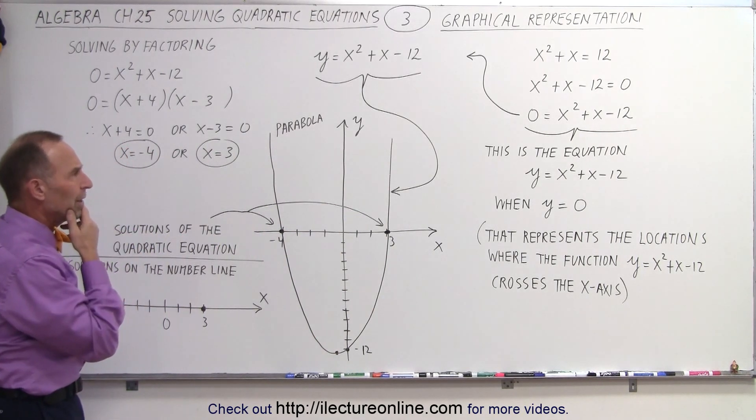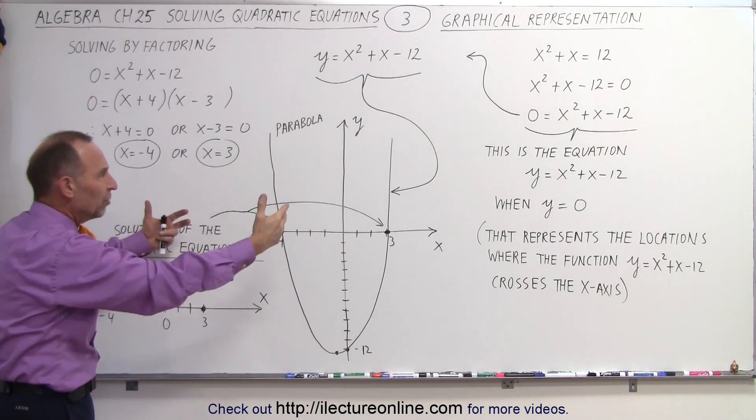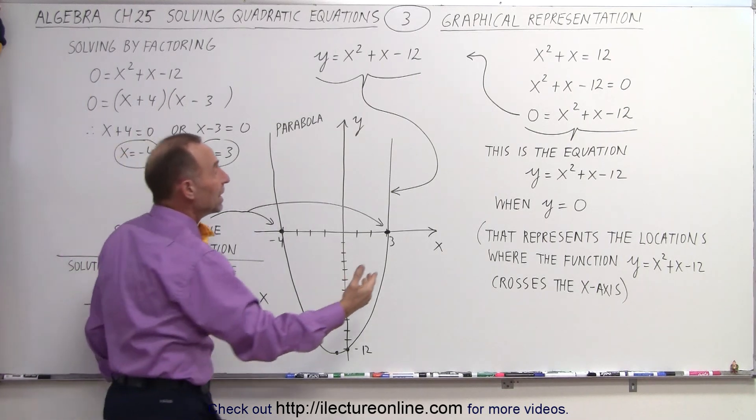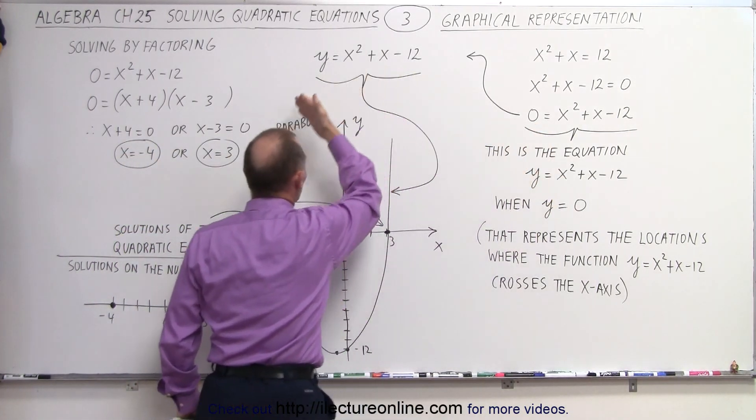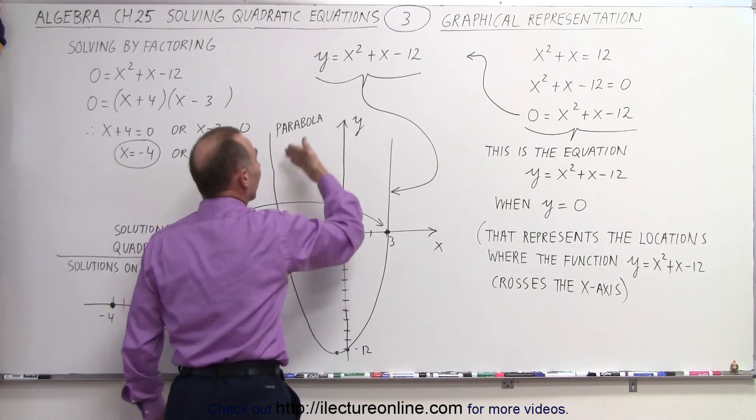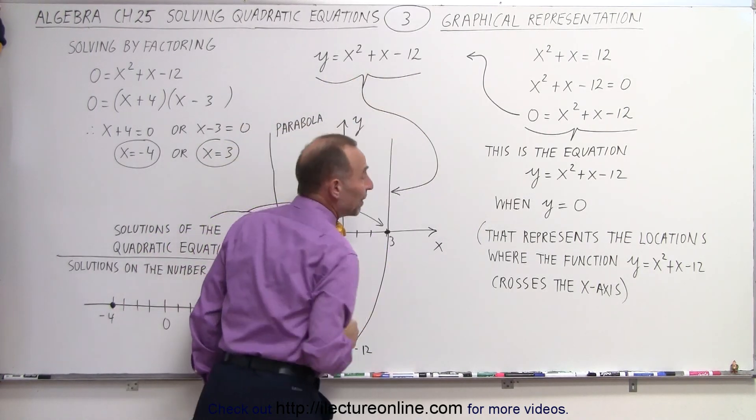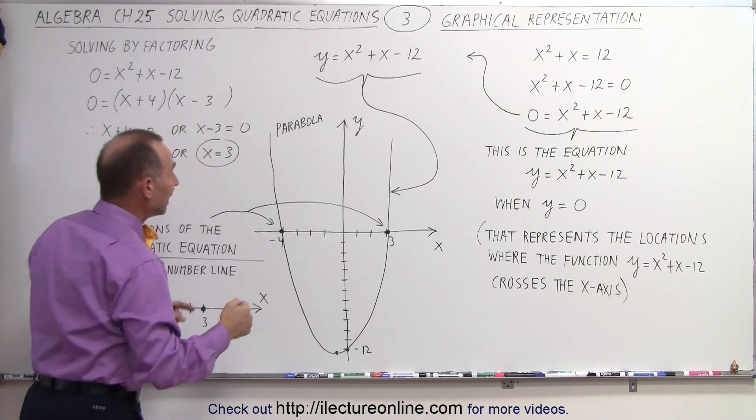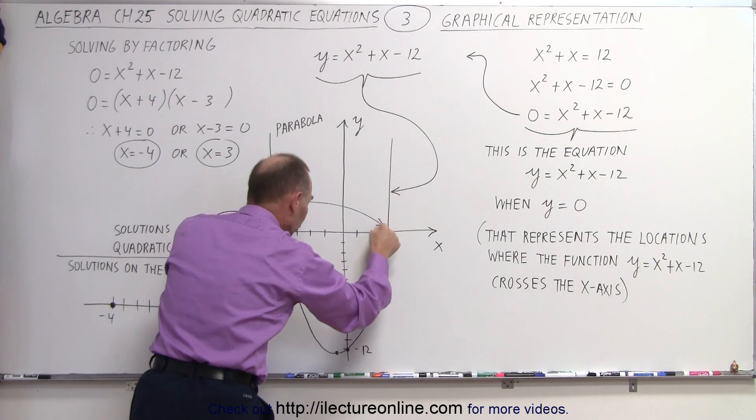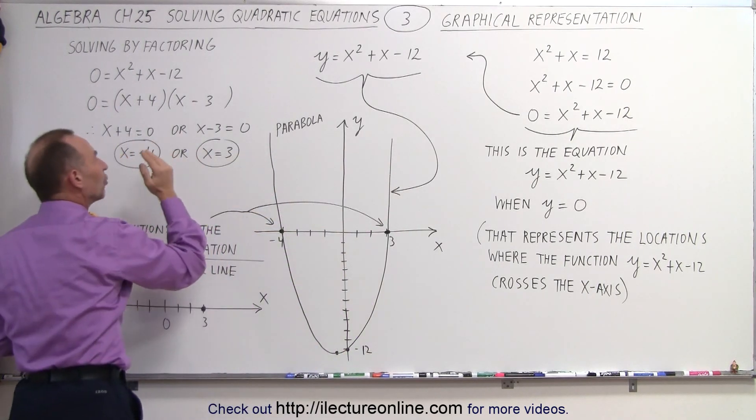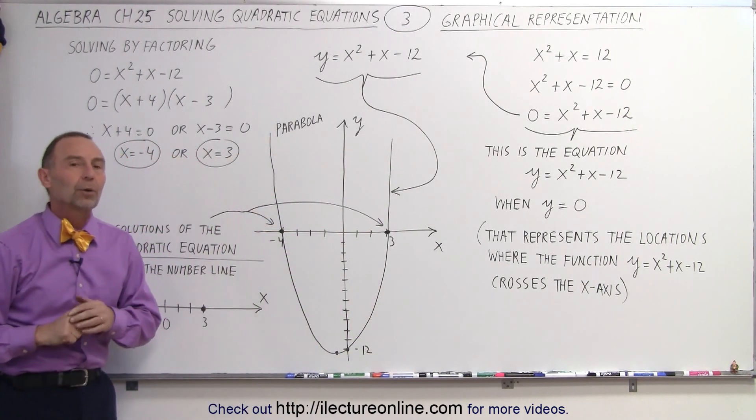So if you want to know how do we physically represent the solutions, we draw the equivalent function. We replace the 0 by y. We then graph the function y as a function of x, this of course being a quadratic function. And where it crosses the x-axis, those particular points where x is equal to on that graph, those are the solutions to our quadratic equation.